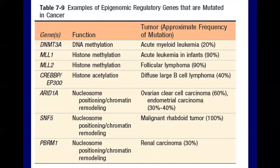These are some of the regulatory genes that are mutated in cancer, along with their function and the tumors identified with genetic mutations. DNMT3A is associated with 20% of acute myeloid leukemia. MLL1 is associated with acute leukemia in infants at 90%. MLL2 is associated with follicular lymphoma at 90%. SNF5 is associated with rhabdoid tumor at 100%. Take note that mutation of these genes leads to alterations in enzyme processes, but because epigenetics involves enzyme processes, this can be reversible.